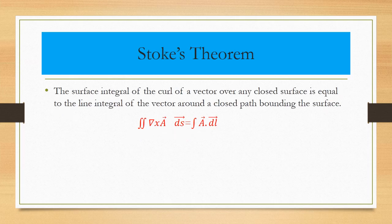The next one is Stokes Theorem. The surface integral of the curl of a vector over any closed surface S is equal to the line integral of the vector around a closed path bounding the surface. Stokes theorem relates line integral and surface integral: the line integral of a vector is equal to the surface integral of the curl of the vector.